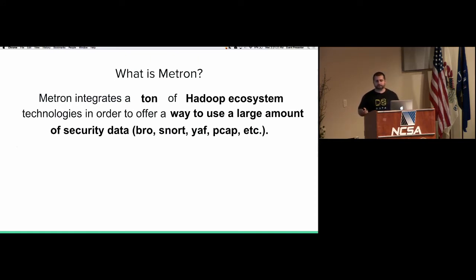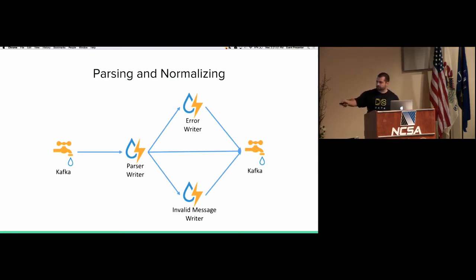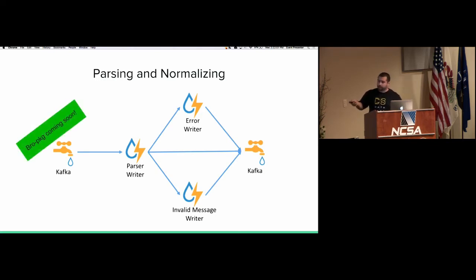It does Bro data, but also Snort, YAF, PCAP, and things like that. It has three main components. The first is parsing and normalization of the logs. This project used to be at Cisco and was called OpenSoc — I think it was 2014 when they presented here. The logs come in from your Bro cluster or wherever, they get cleaned up, normalized, and move on to the next tier. The Kafka plugin for Bro is coming soon — I've been working on it.